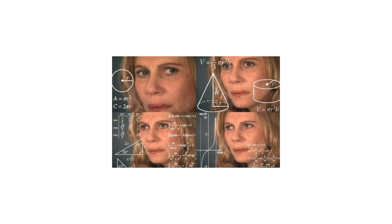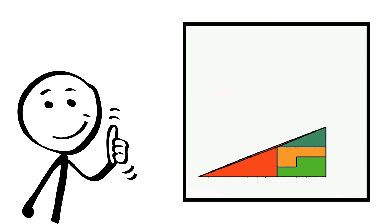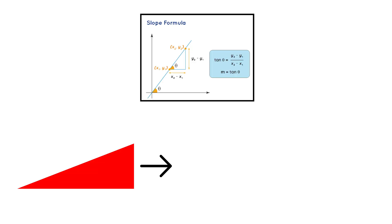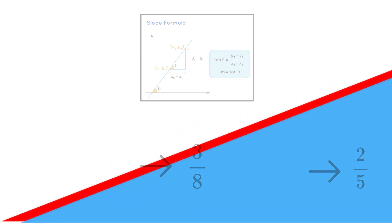From a mathematical point of view, this can be demonstrated by examining the slopes of the triangles that make up the figure. The red triangle has a slope of 3 eighths, while the blue one has a slope of 2 fifths.